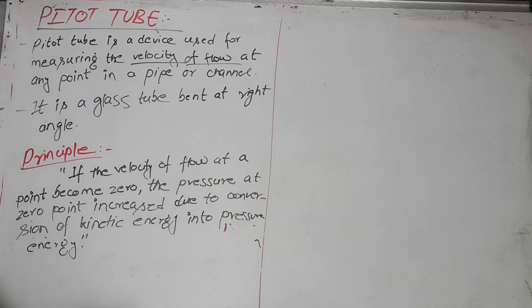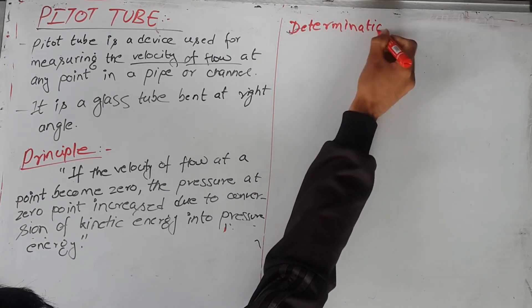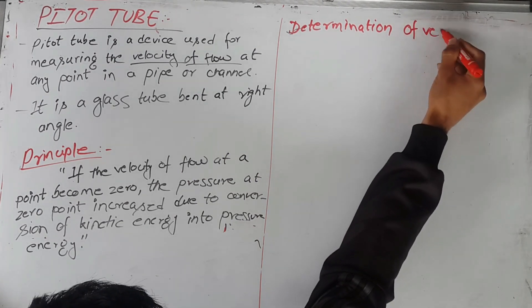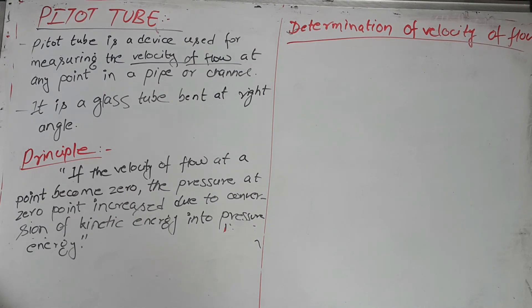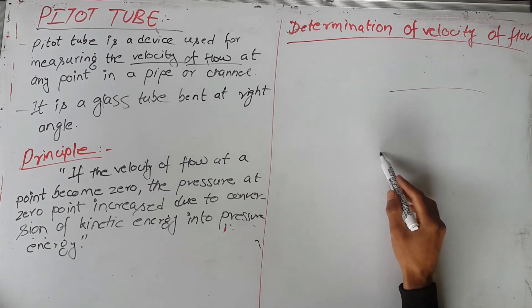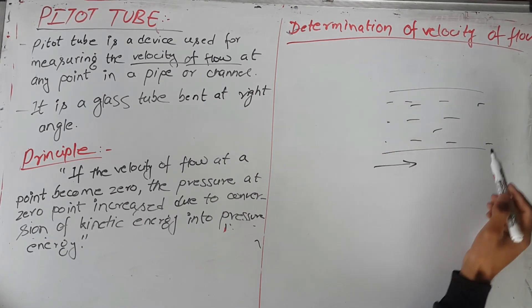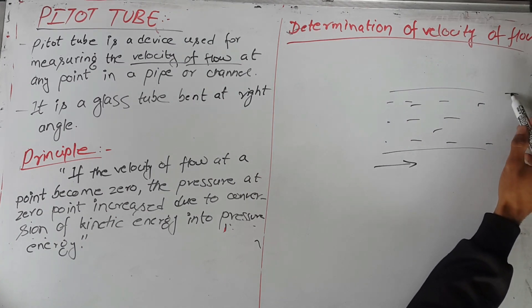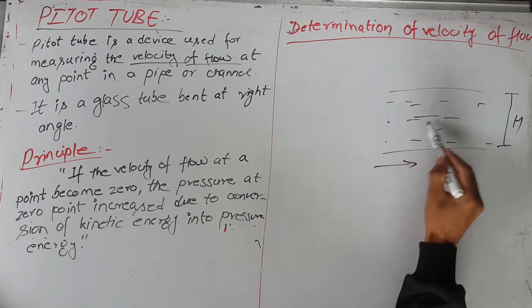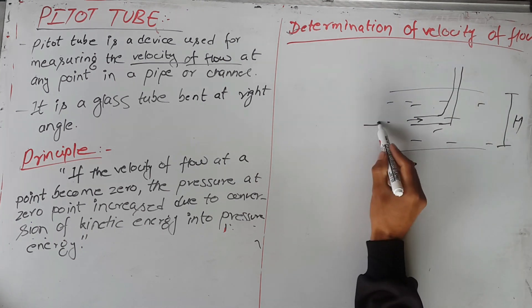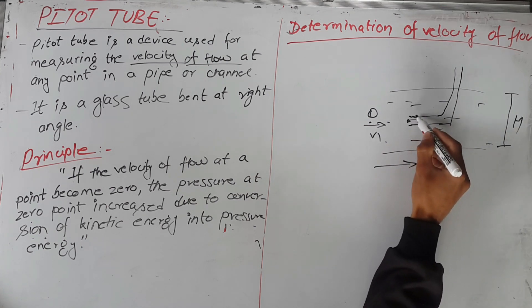Now we go with the determination of velocity of fluid using the pitot tube. First, we consider a channel where water is flowing downstream. The pitot tube is placed at the centre of the flowing water. Point 1 is far upstream, and point 2 is just at the inlet of the pitot tube.